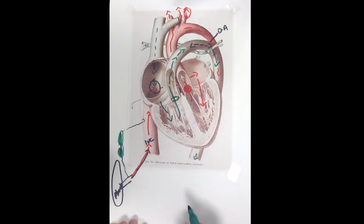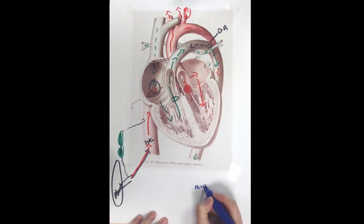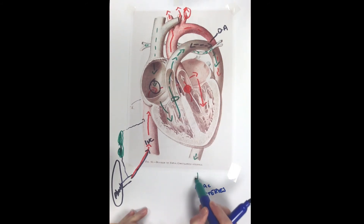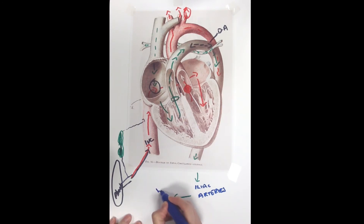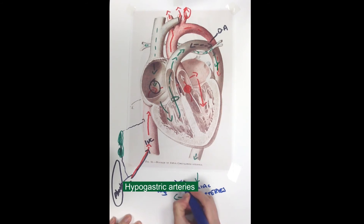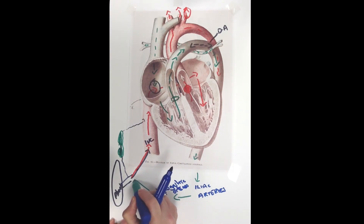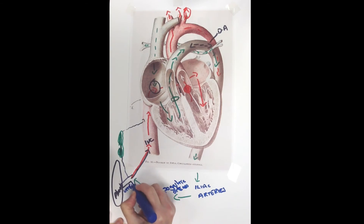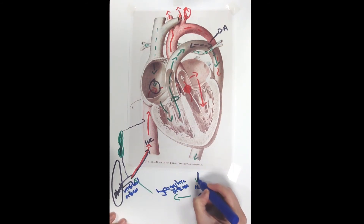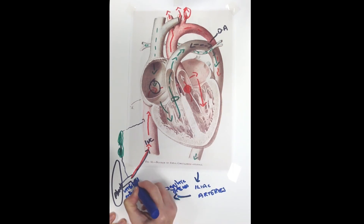The lower limbs are then perfused, and blood enters the iliac arteries. This blood then goes to another temporary structure — the hypogastric arteries — which transport the blood back to the umbilical cord. Once the hypogastric arteries enter the cord, they are known as the umbilical arteries, and they return lesser oxygenated blood — quite deoxygenated by this stage after travelling around the whole system — back to the placental bed.